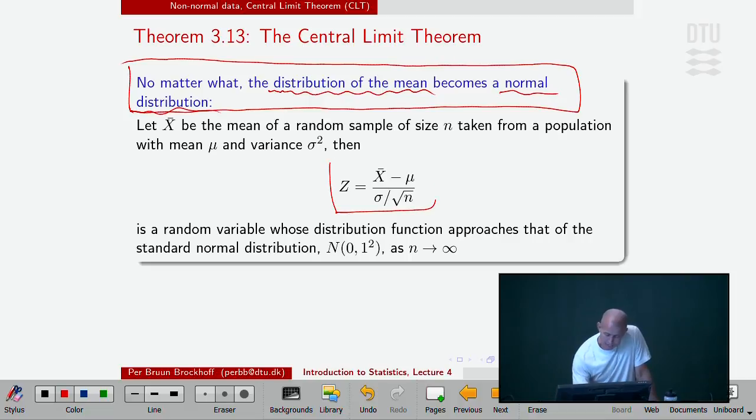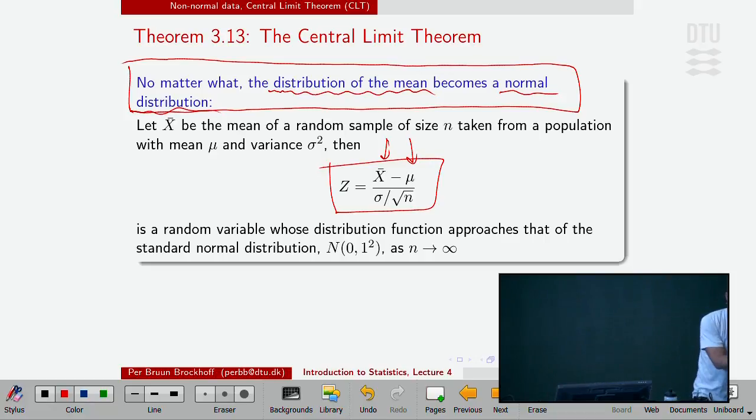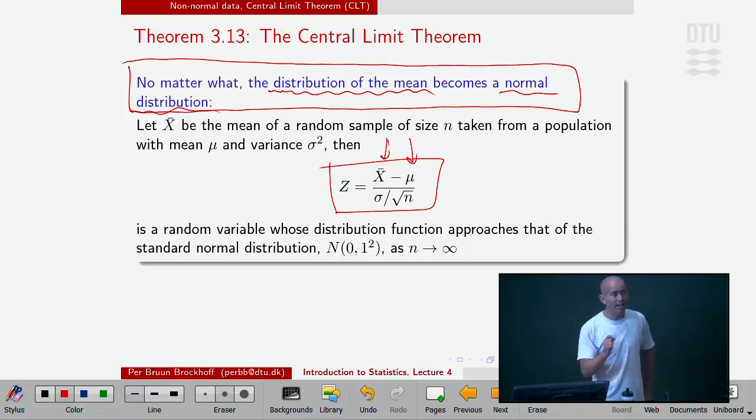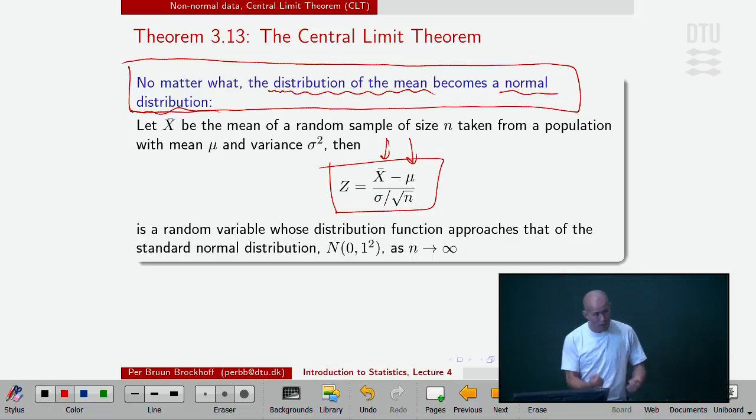Here it says, if I look at the same thing as I looked at before, the error I make in using the mean to say something about mu, and I look at the standardized error, this standardized error I make in doing statistics, in using my mean, because that standardized error behaves as a standard normal, no matter how the X originally behaves, with a little catch, as long as I have a large enough sample. There are no free lunches. It doesn't come free.